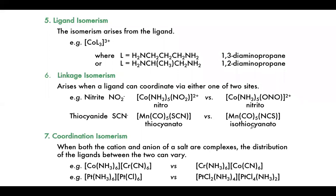Coordination isomerism: when both the cation and anion are themselves complexes, the distribution of ligands between the two can vary. For example, we can have a hexaamminecobalt complex with a hexacyanochromate complex, or swap the metals around and still have the same number of atoms of each type on paper — but two very different complexes. The same swap can be seen with two pure metal complexes versus two mixed metal complexes.